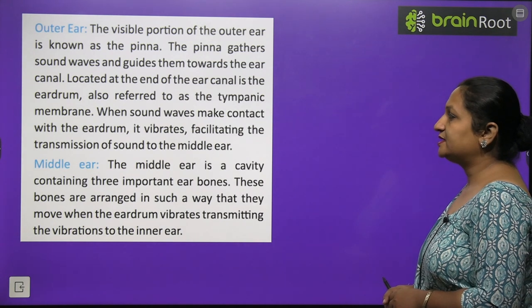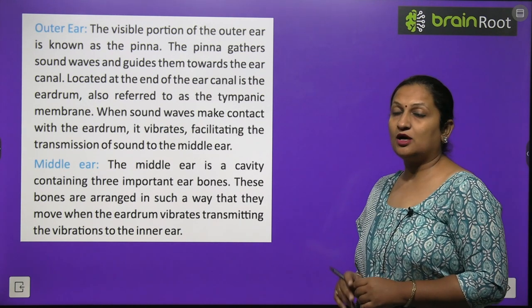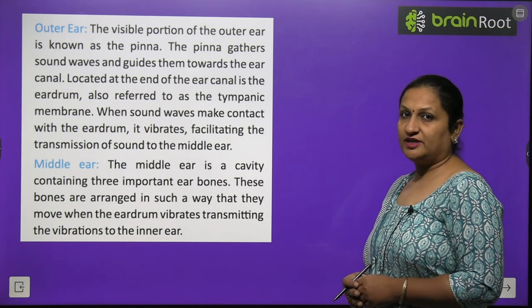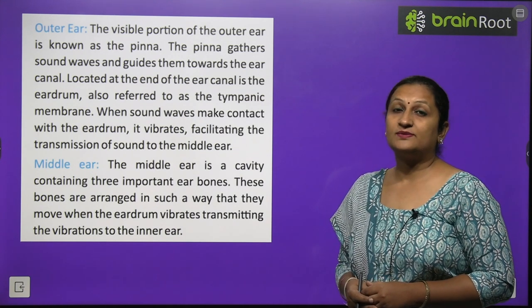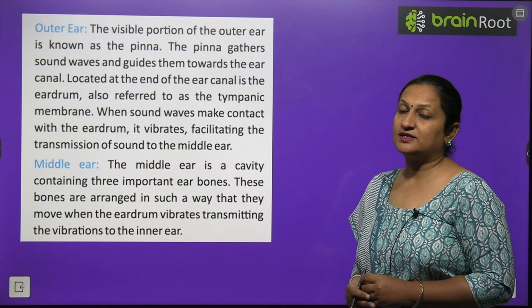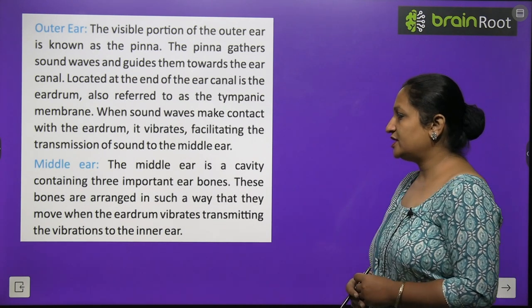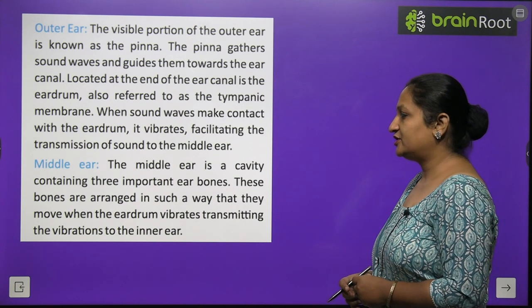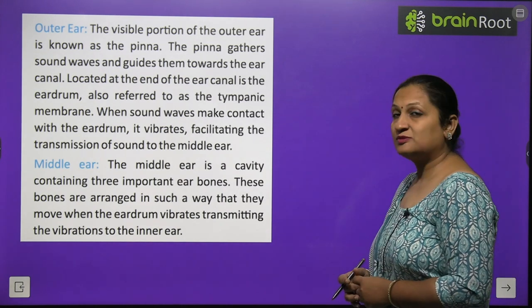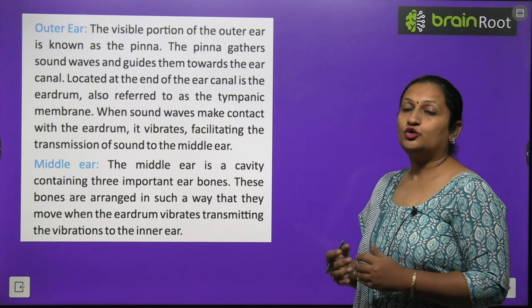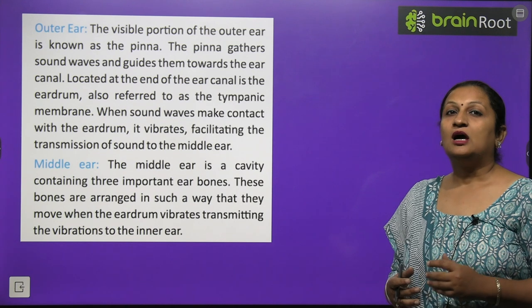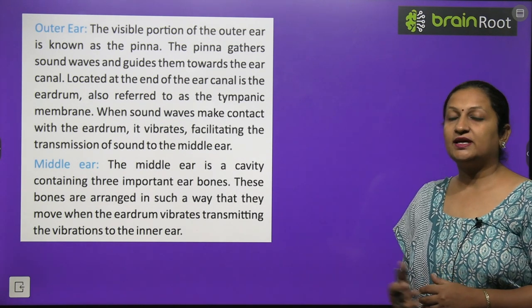When the sound waves make contact with the eardrum, it vibrates, facilitating the transmission of sound to the middle ear. So what happens now? These vibrations pass where? To the middle ear. The middle ear is a cavity. Three bones are present here. The smallest bones in our body are our ear bones, present in the middle ear. These bones are arranged in such a way that they move when the eardrum vibrates. These three bones pick up the vibrations from our eardrum and send them where? To the inner ear.